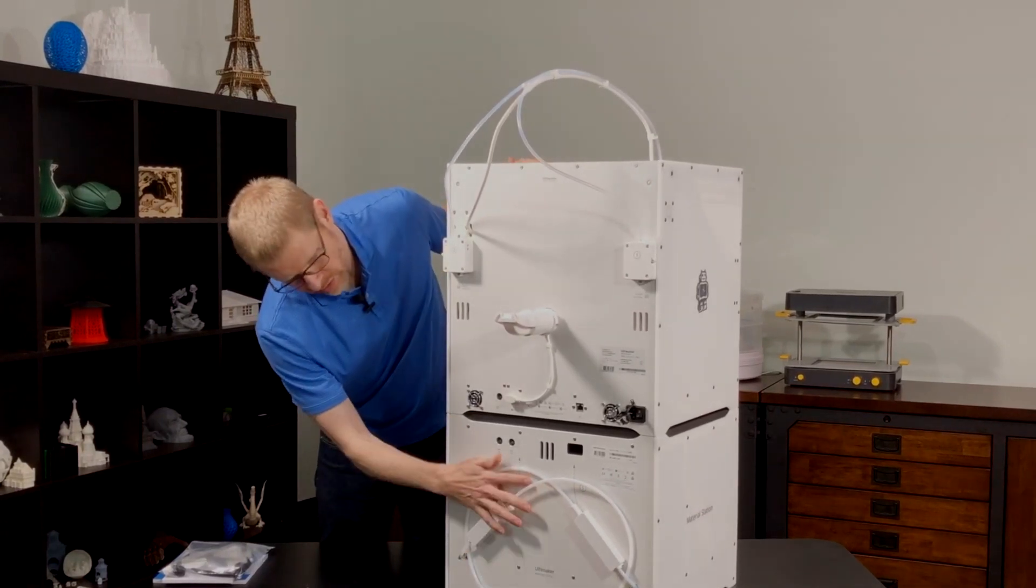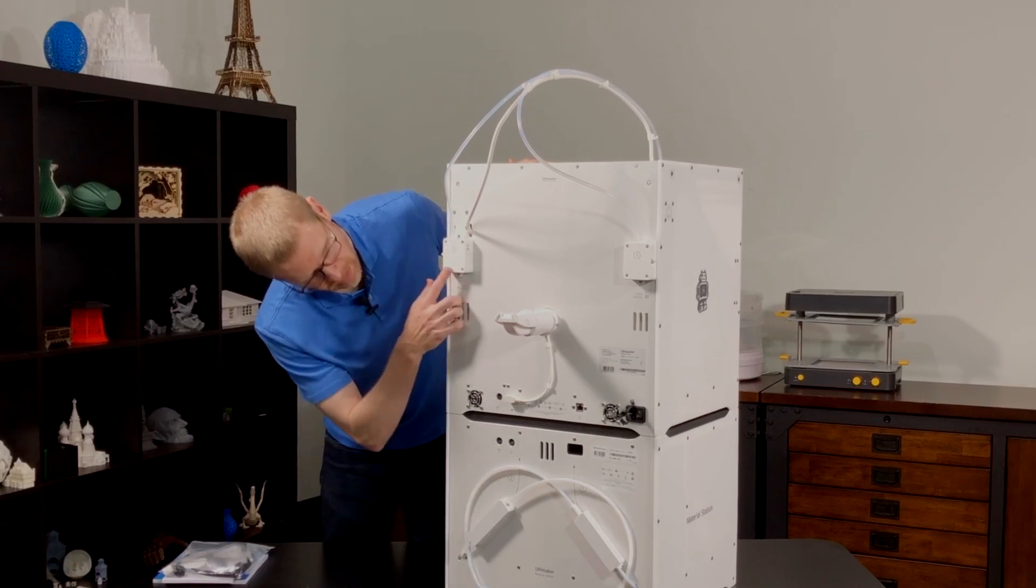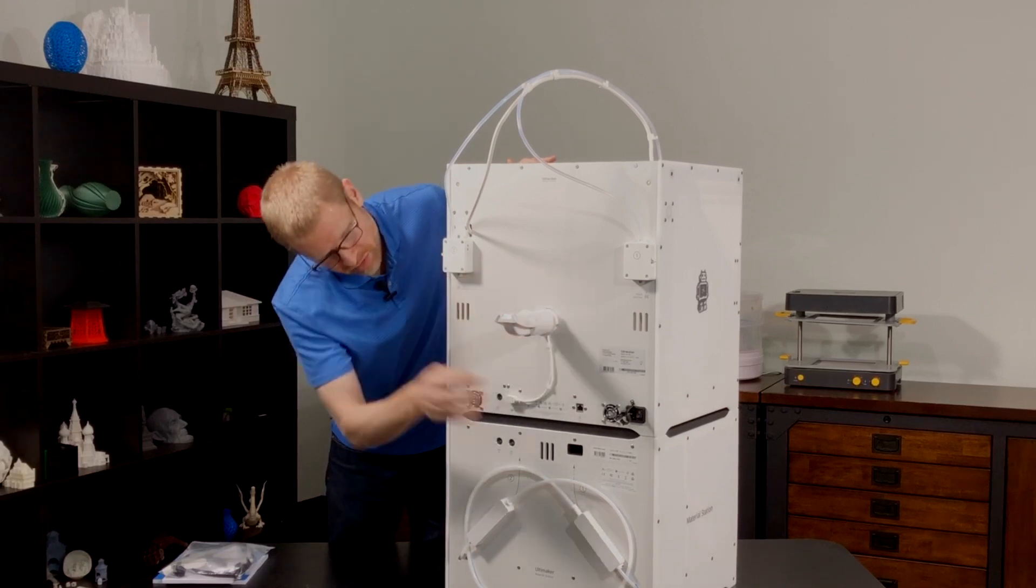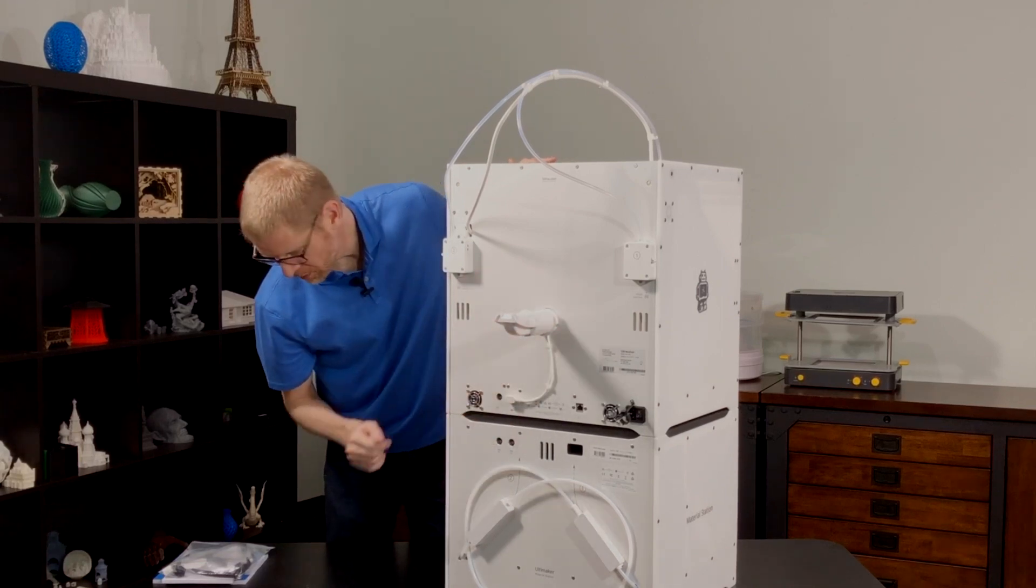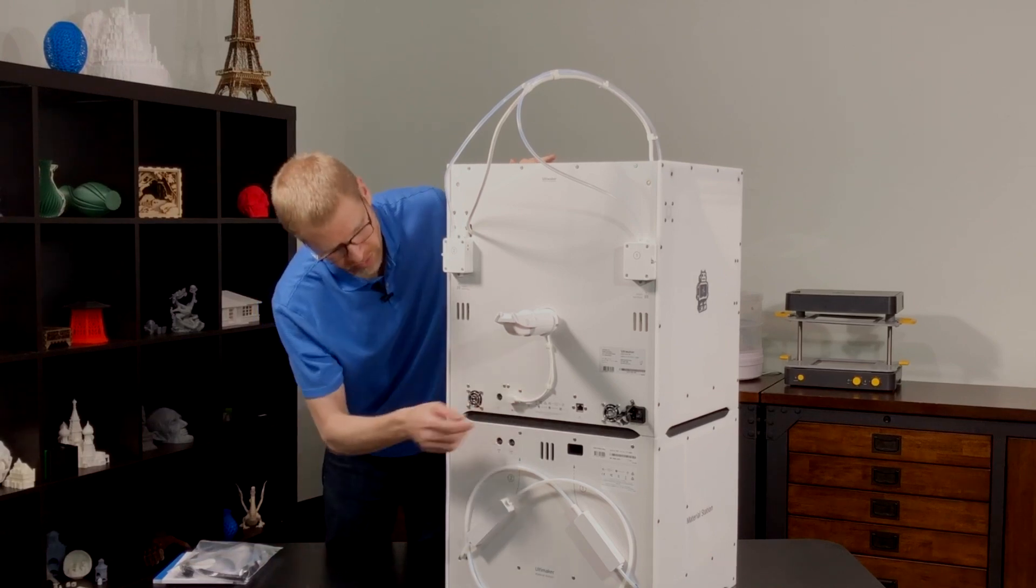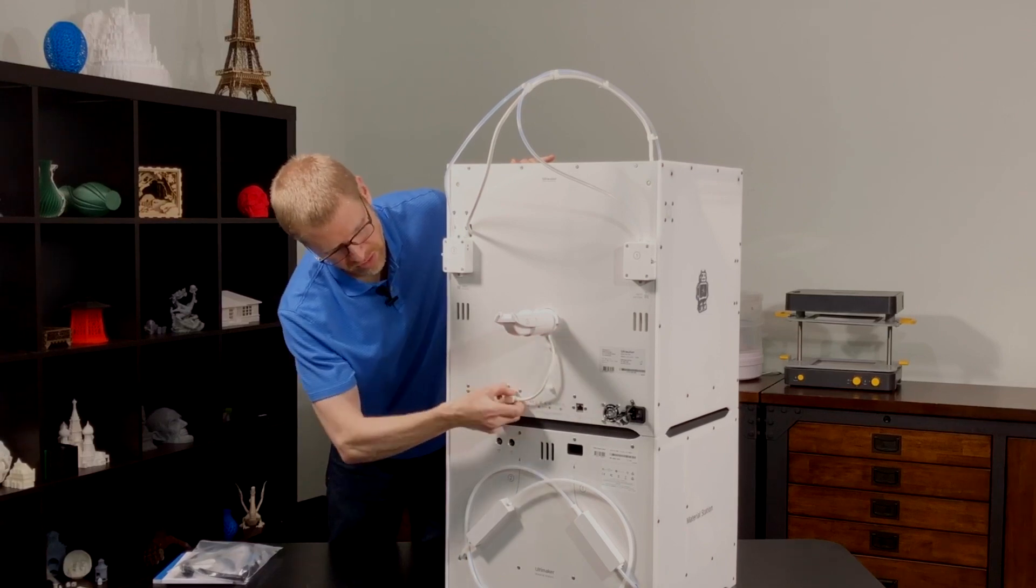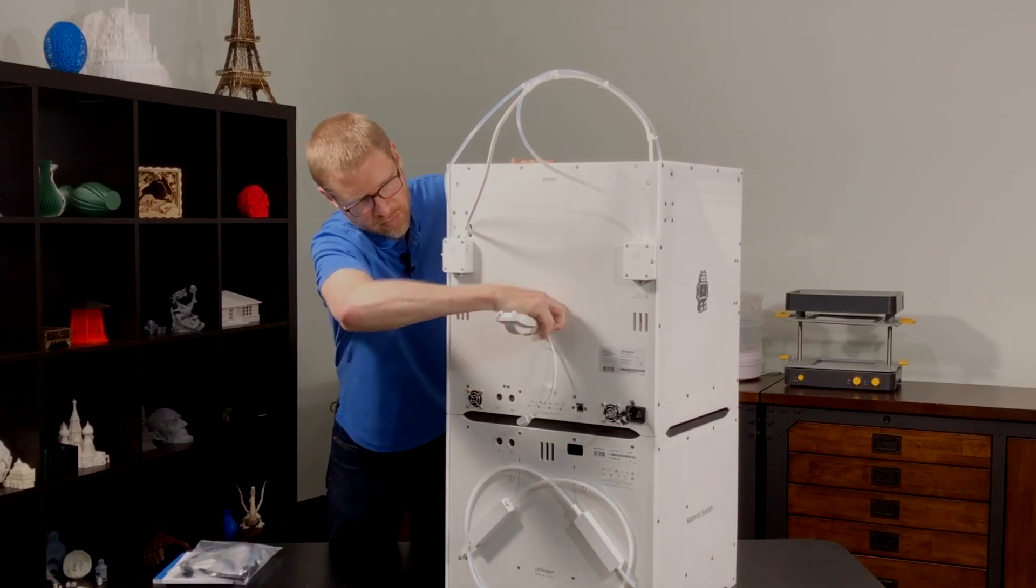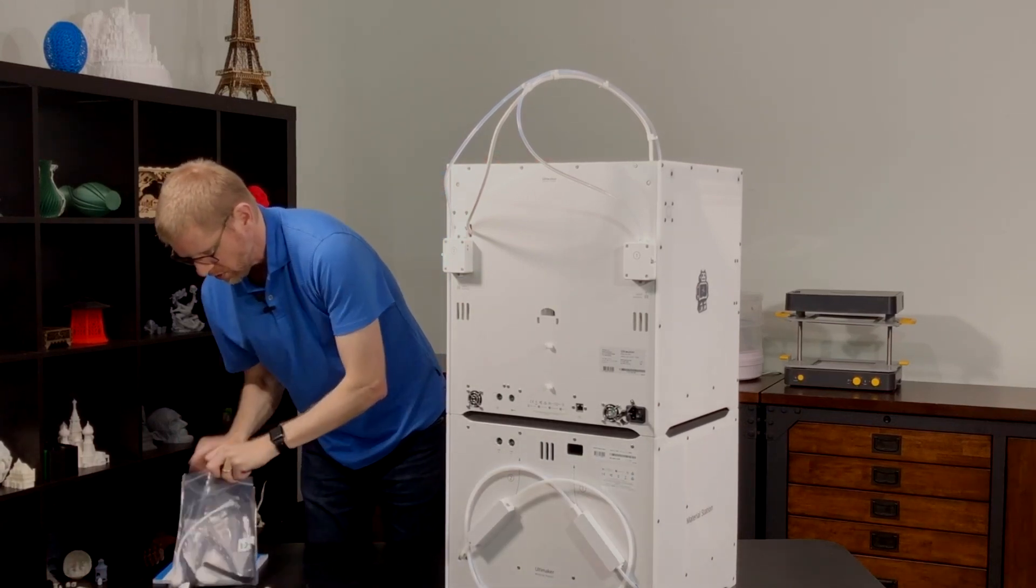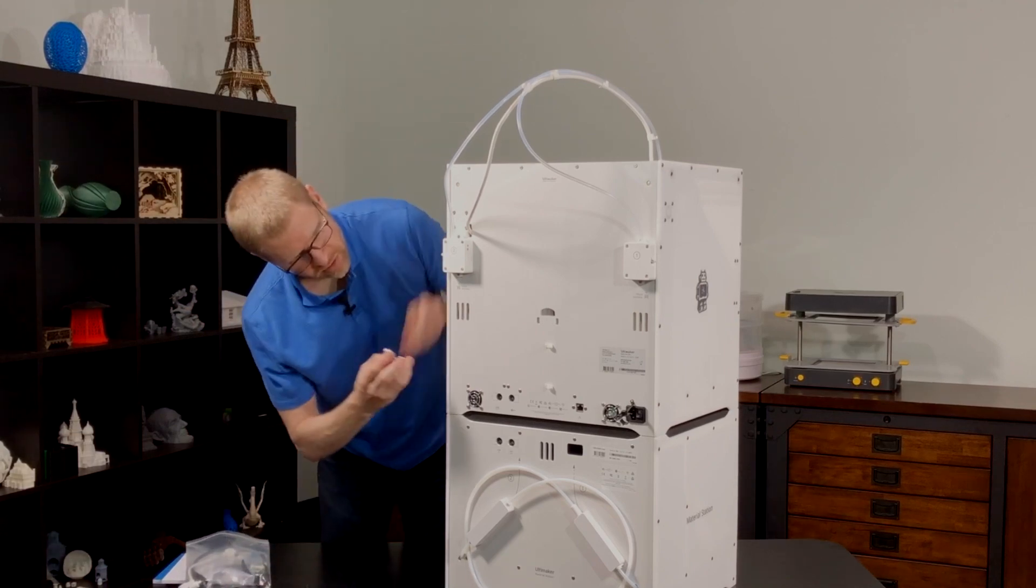And on the back, we can see these Bowden tube cables on the material station. These are going to connect up to the feeder mechanisms on the S5. And we're going to remove the spool holder on the S5. And then we're going to connect the other cables, which I'll take you through in a moment. So first, I'll get rid of the spool holder here. The S5 is turned off, of course. You'll want to make sure that's the case while you're doing this. So there's the spool holder.